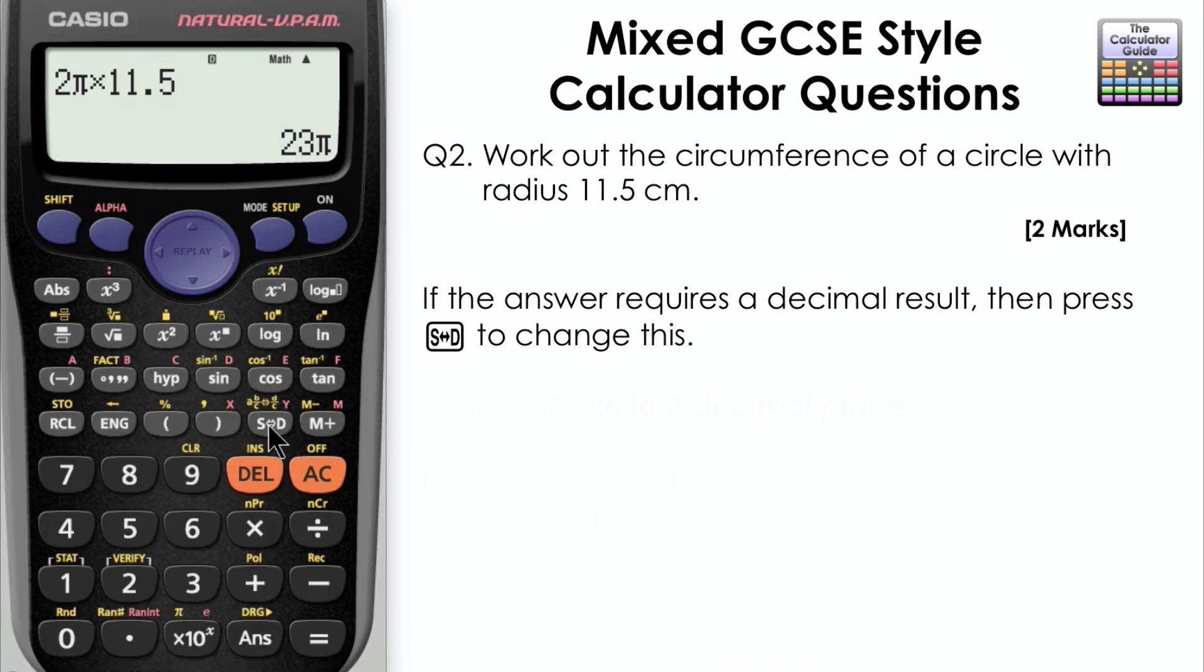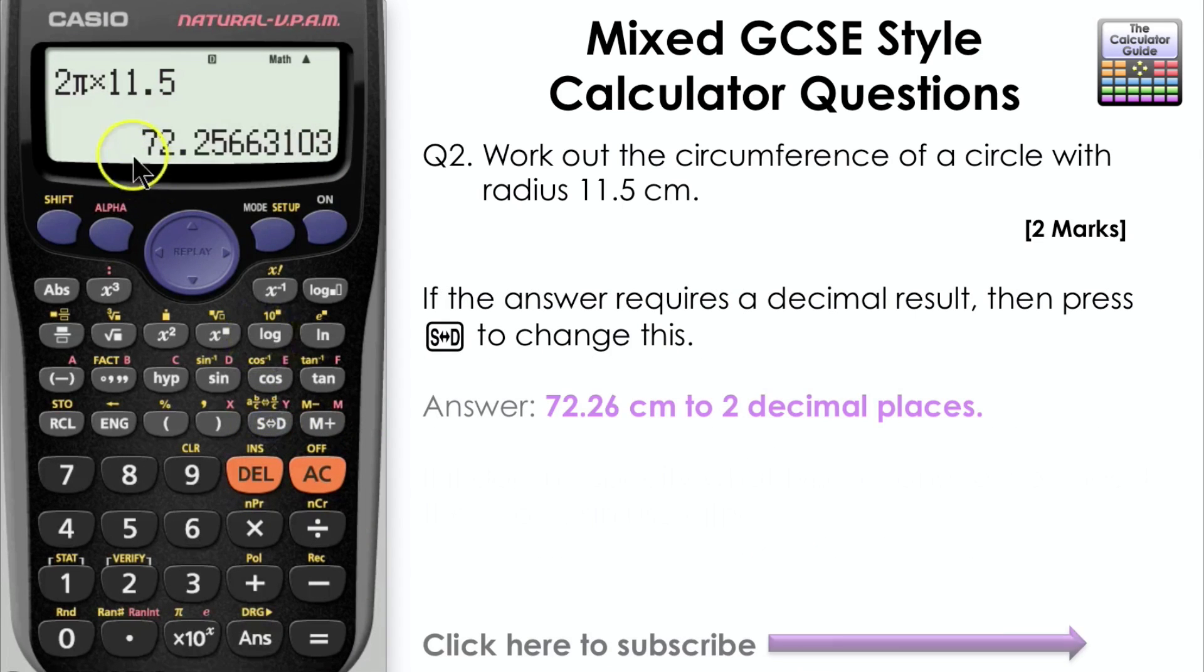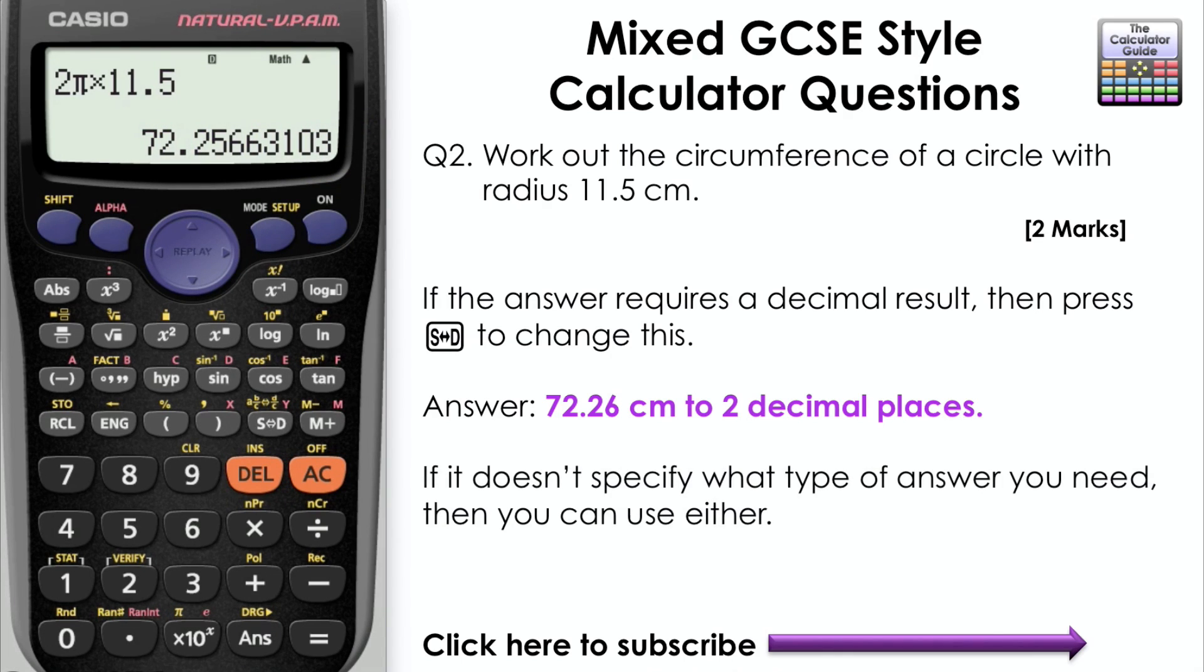If the answer required is a decimal, then you need to press SD to change this. I would always recommend writing down your full calculator display on your working, but we can round the final answer to 72.26 centimeters to two decimal places, or whatever is appropriate.